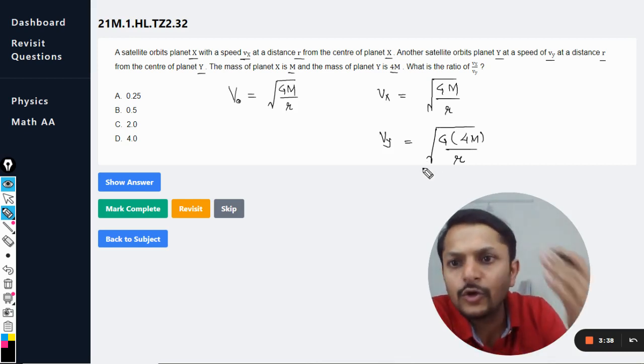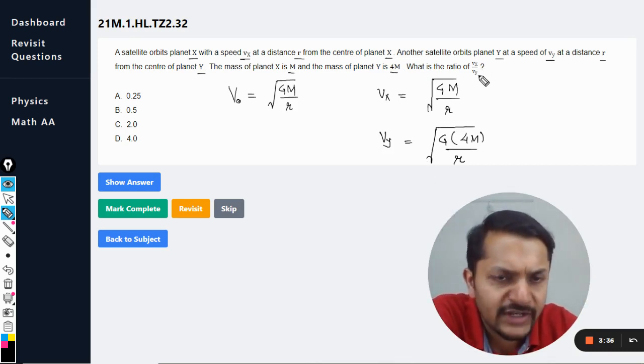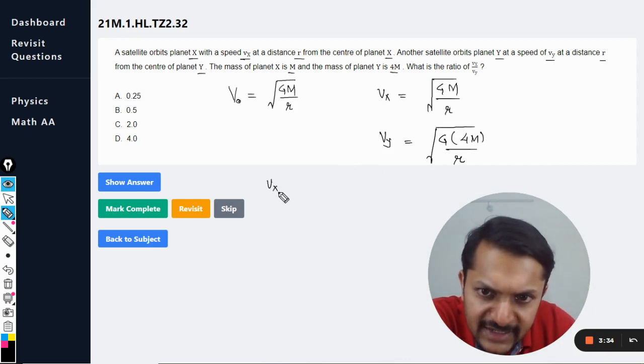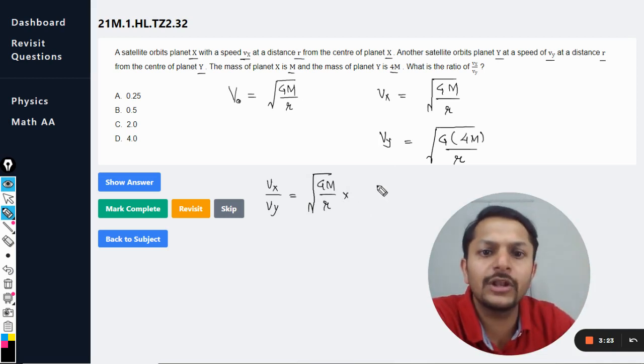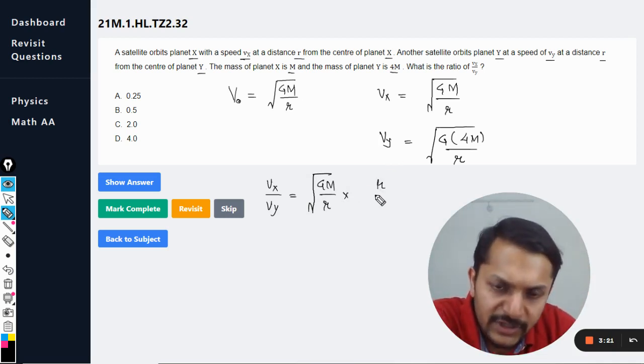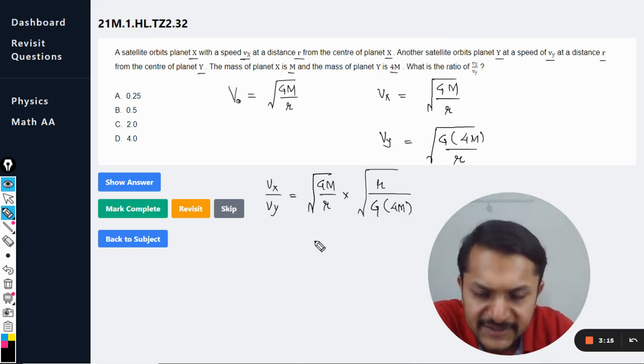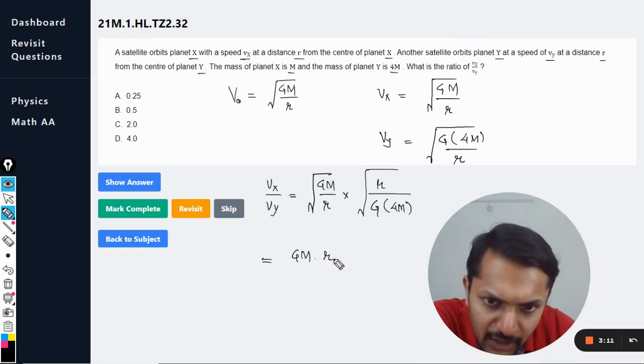So we are going to divide them because we just want to find the ratio VX divided by VY. So it will be square root of GM over R divided by square root of G times 4M over R, and overall it can be clubbed now.